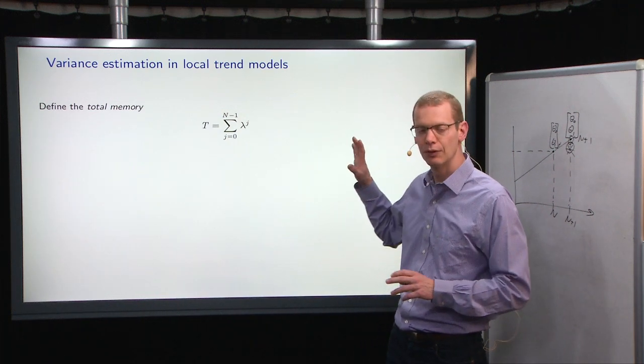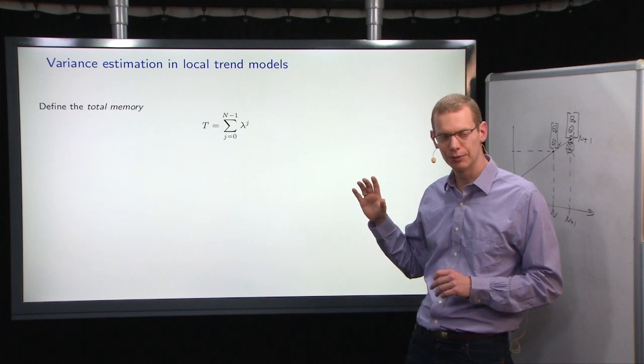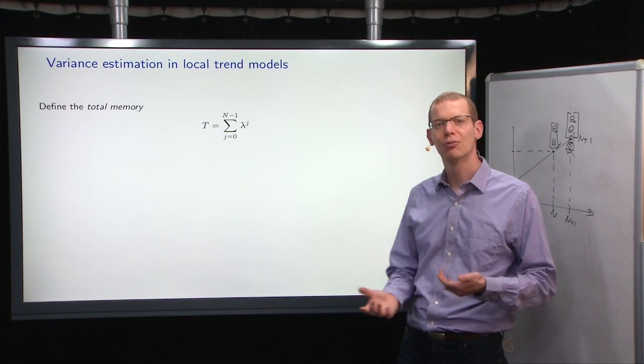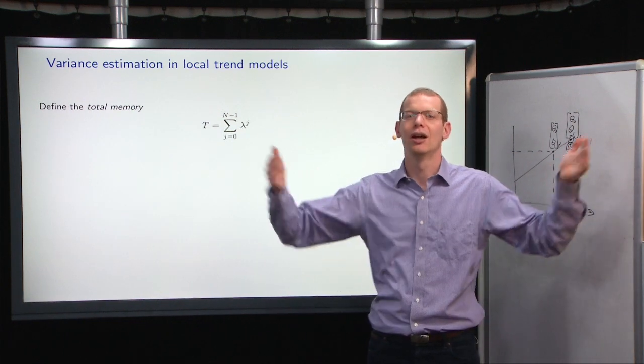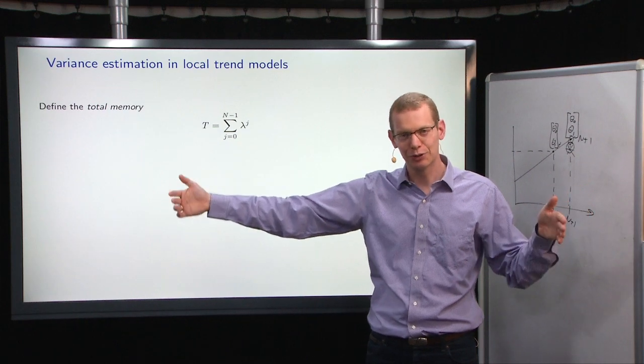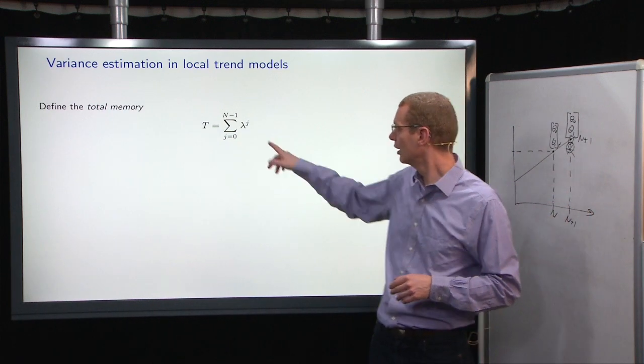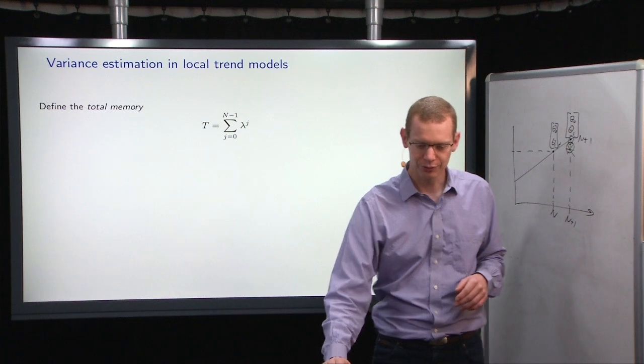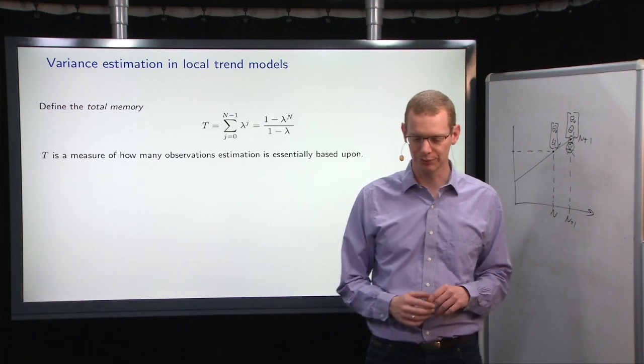Now, when we do this, we should consider one thing, because before when we did the global models, we had n degrees of freedom. Now in this case, we have some weights that we add in there, so we call that the total memory of the system.